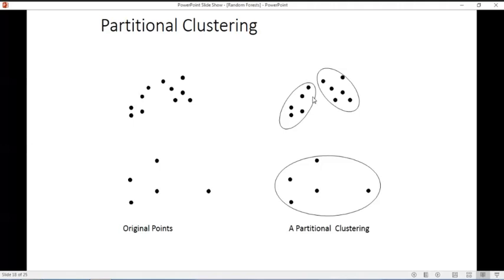Partitional clustering, we have our data points, and each point can only be in one cluster. So that's how they differentiate. Basically, we want to create clusters where the center of this cluster, all the points that are in that cluster are closest to that centroid point.